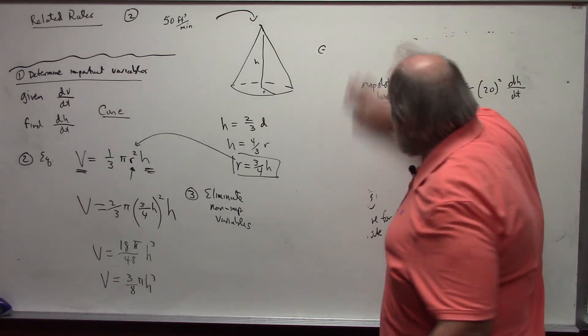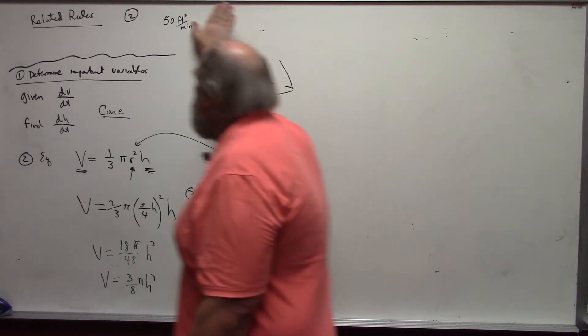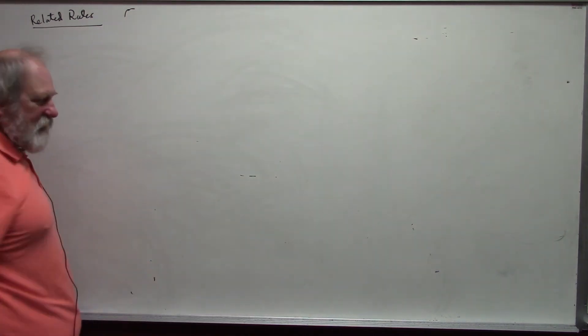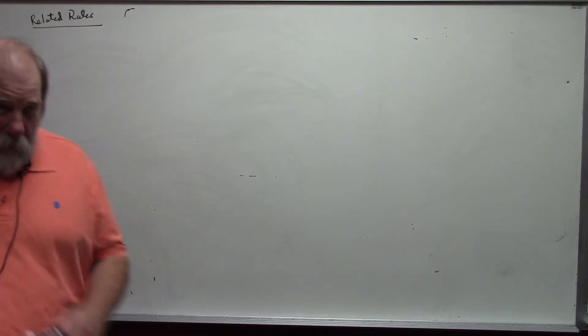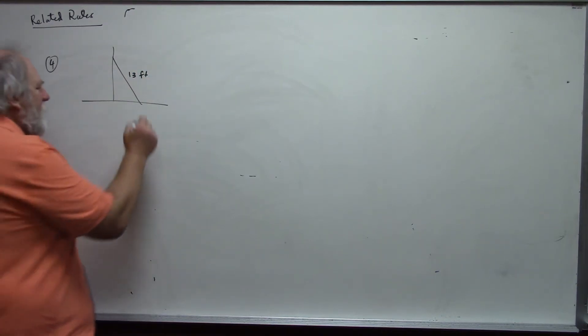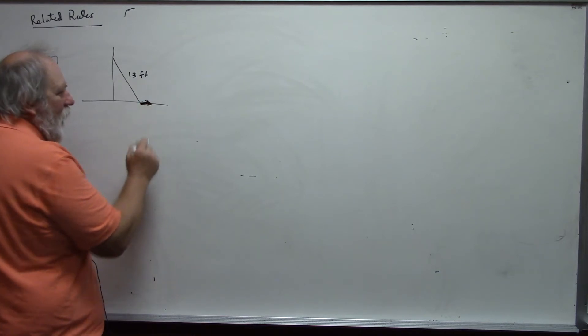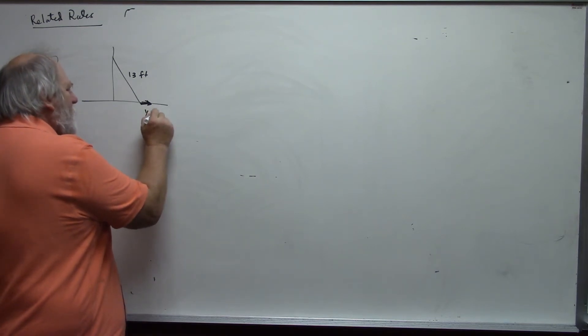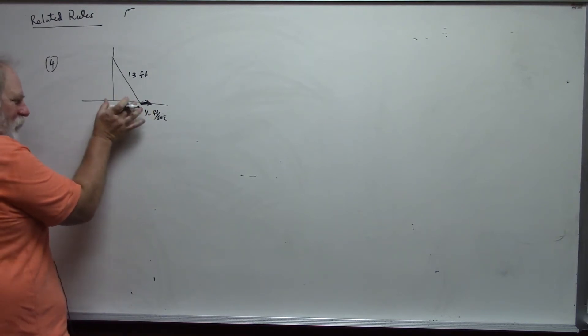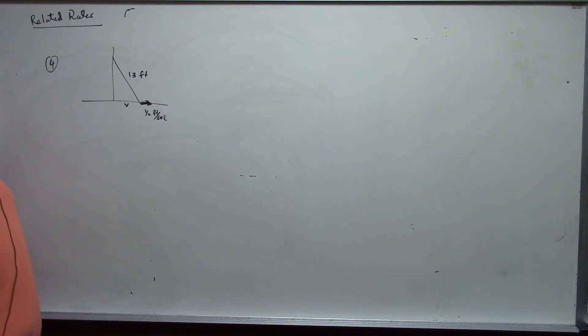I'm going to do one more in this section. And let's suppose that I have the following. This time I'm just going to go through. And this is problem number four. We have a ladder against the wall. The ladder is 13 feet long. And the bottom of the ladder is slipping out away from the wall at a rate of one-half foot per second. And so, since this rate is the distance that the foot of the ladder is from the base of the wall, since that is changing, that is an important variable. I'll call that x. And so, we are given dx/dt.